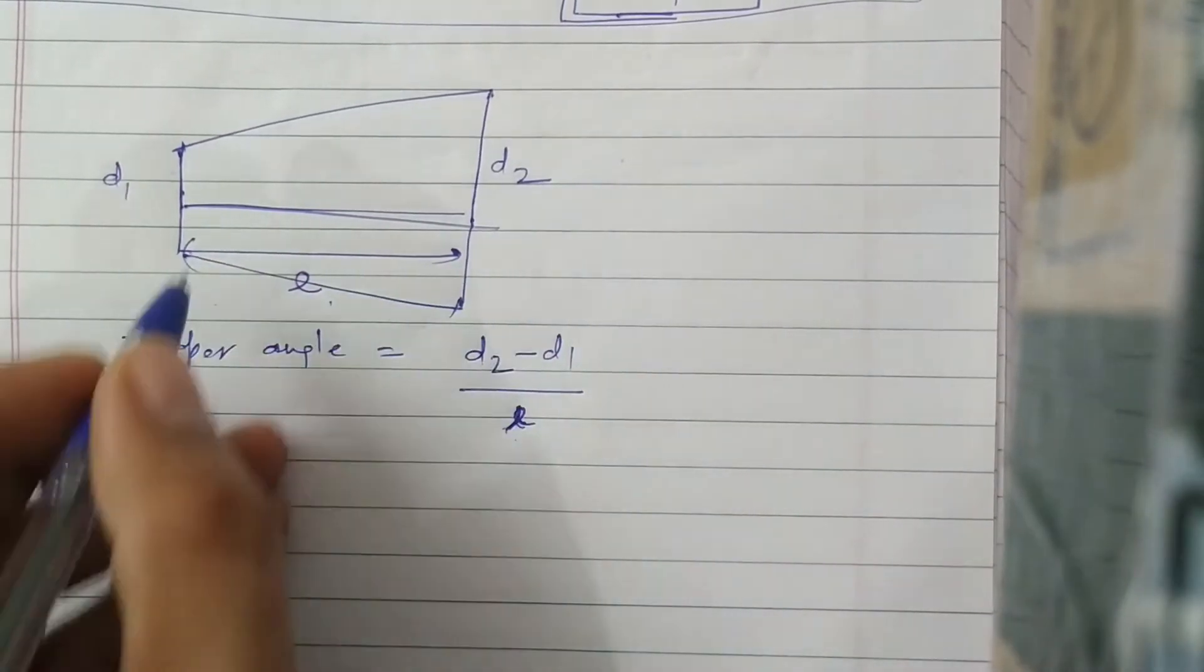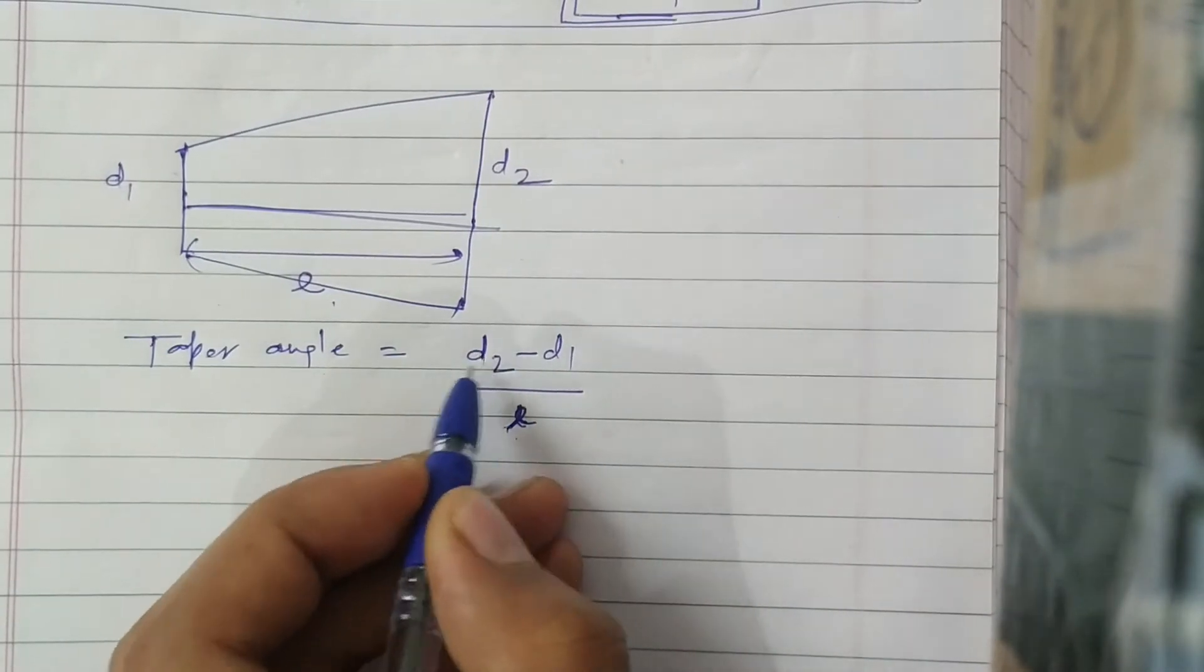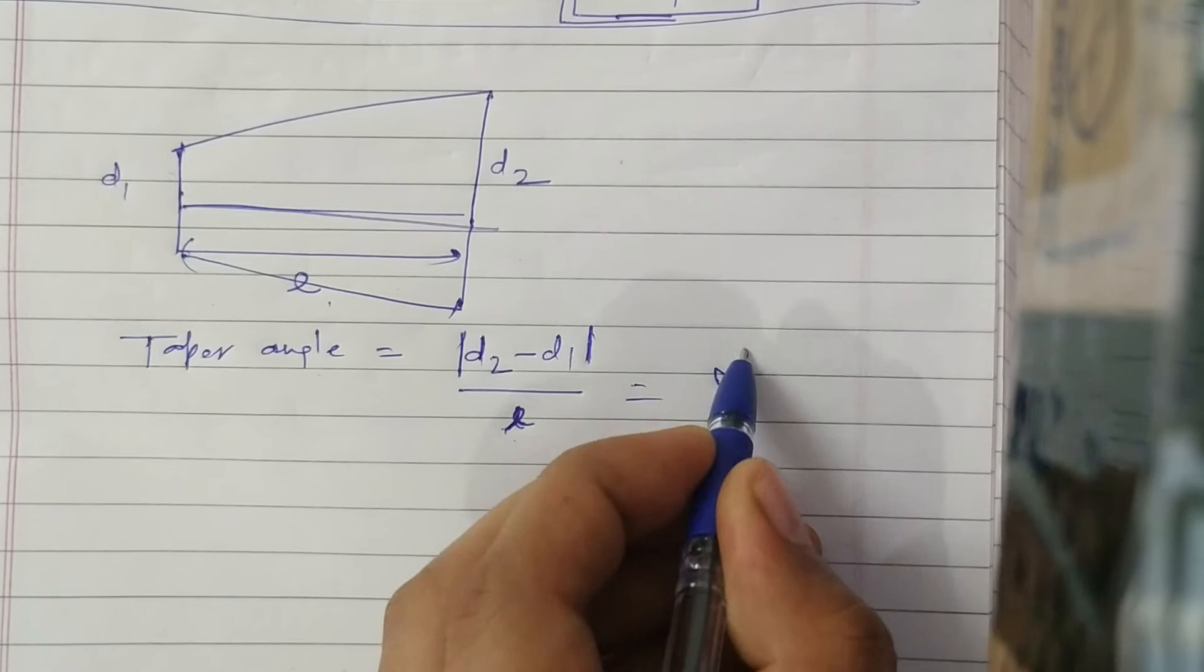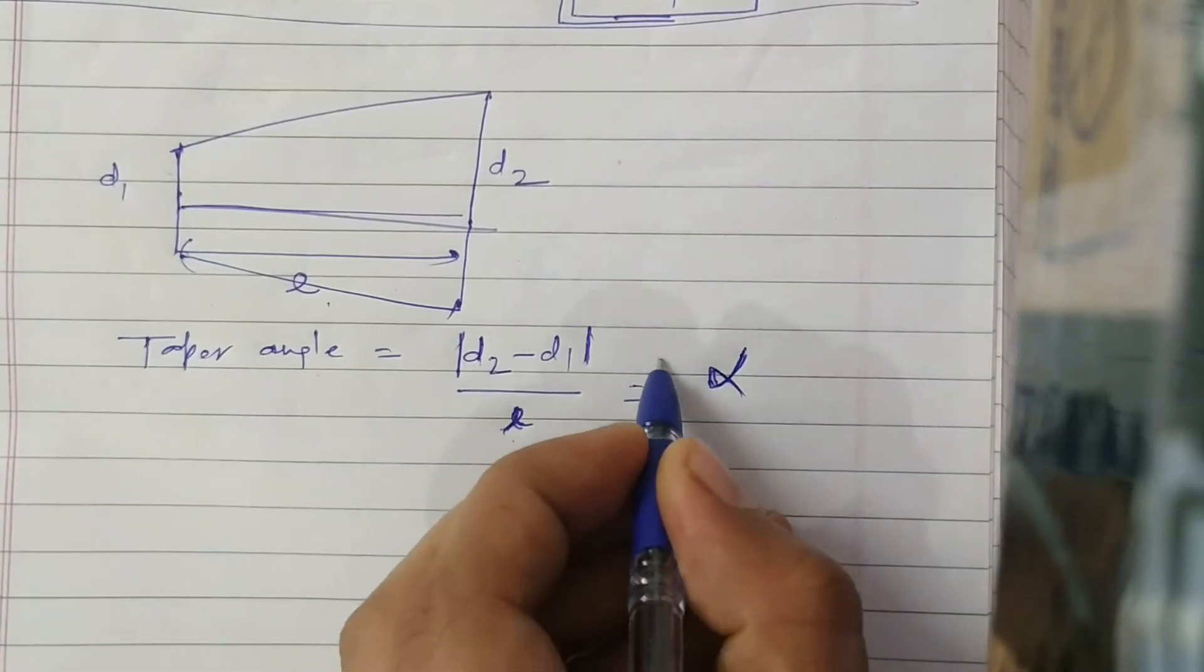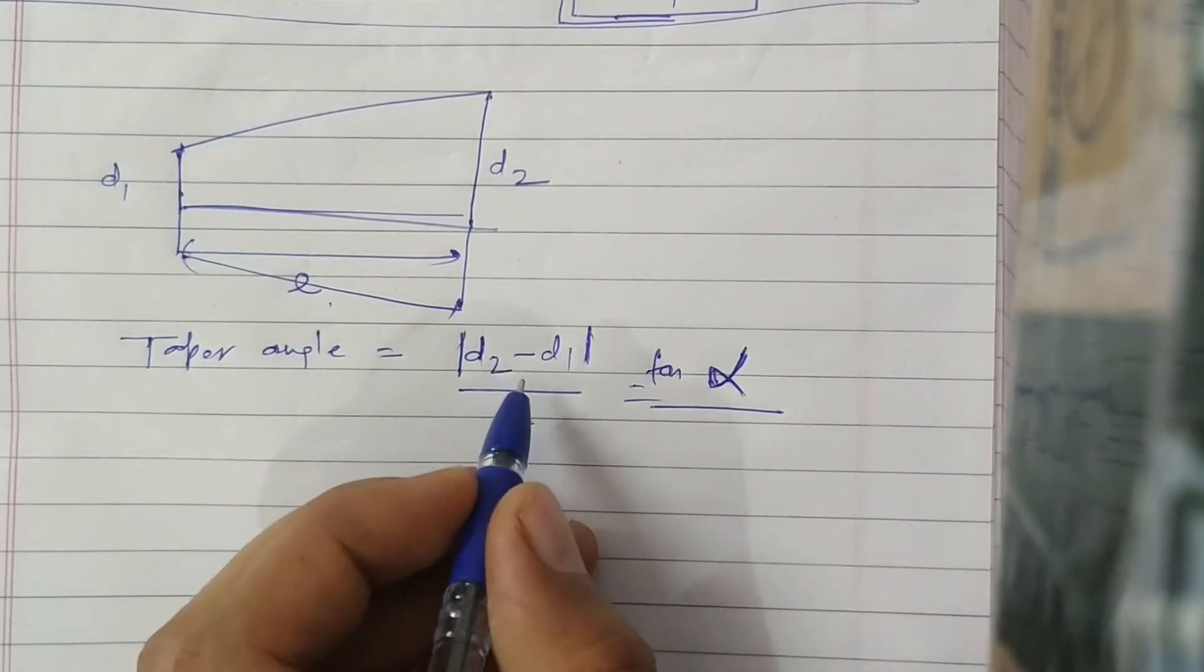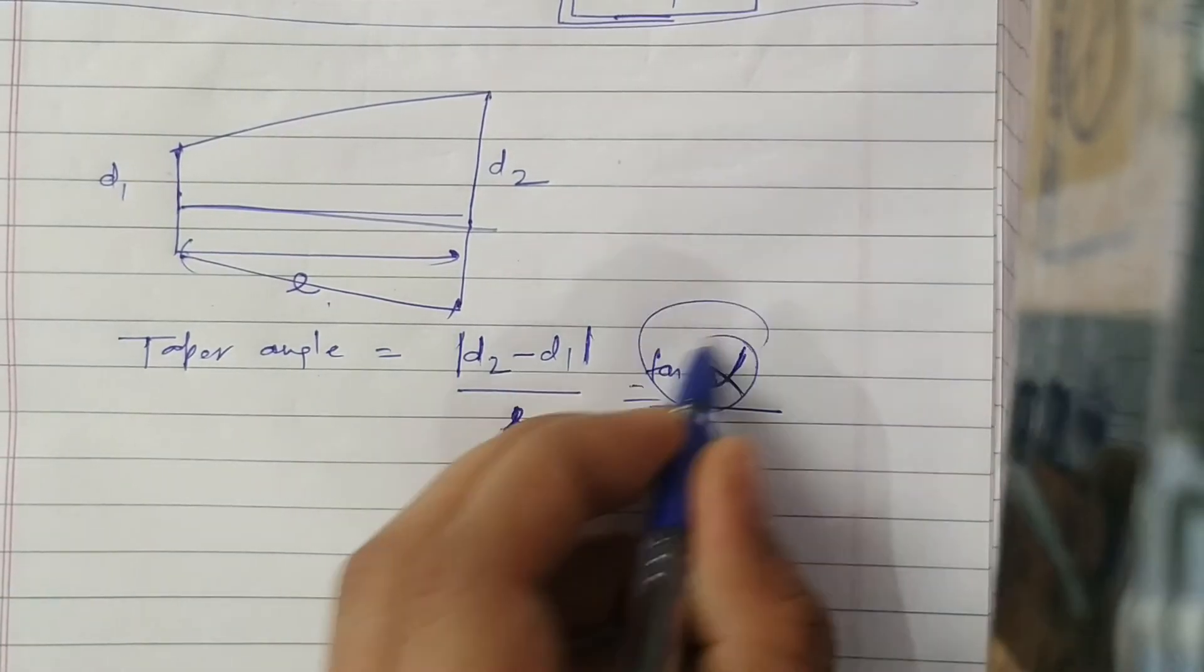d2 is the biggest diameter. Sometimes what will happen is they will not give you some dimension; they will give you the taper angle and you have to calculate the dimension.